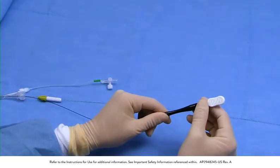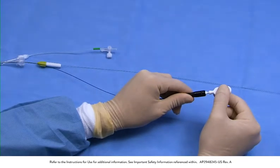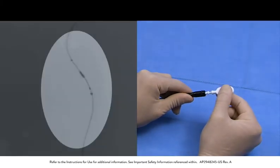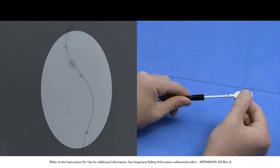Hold the black handle steady and pull back on the white pull handle to deploy the filtration element. Deployment is occurring when the distal marker band on the delivery catheter moves proximally away from the marker bands on the filtration element.